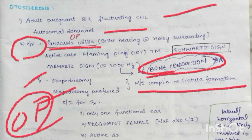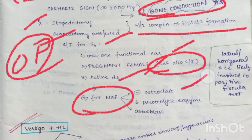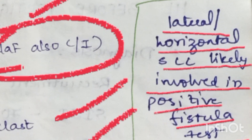Contraindications for surgery are: only one functional ear, and pregnant female. In pregnant female, NaF is also contraindicated. In active disease, use NaF — it inhibits osteoclasts, decreases proteolytic enzymes and osteoblast activity. The lateral or horizontal semicircular canal is likely involved in the positive fistula test.